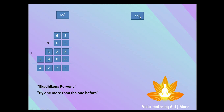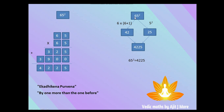The second part is always going to be 5 squared, which is 25. So the first part is 42 and the second part is 25 — combine them and you get 4225. So 65 squared is 4225. Isn't it easy?